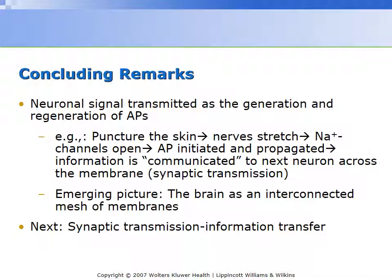In conclusion, let's recapture what we started talking about in the previous lecture. The neuronal signal is transmitted as an action potential. The action potential is self-perpetuating, it's renewable — it keeps its amplitude and its duration throughout the entire path. The magnitude is the same; it's only the rate of repetition and the frequency, or rather the train of action potentials, that encodes the signal.